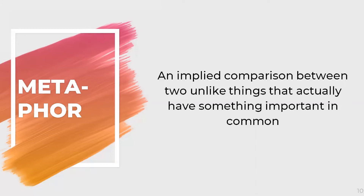A simile uses explicit comparison — explicit meaning it is fully and clearly expressed. A metaphor, on the other hand, is not directly expressed or stated; the comparison is implied.